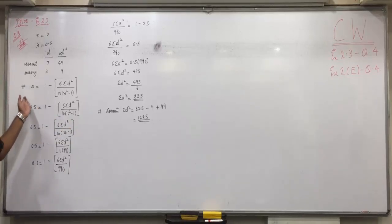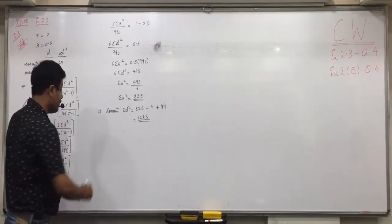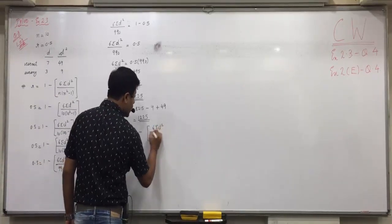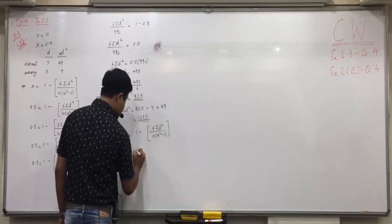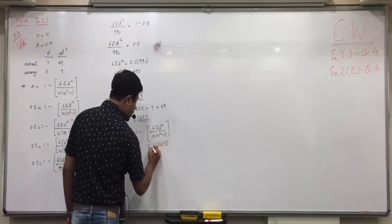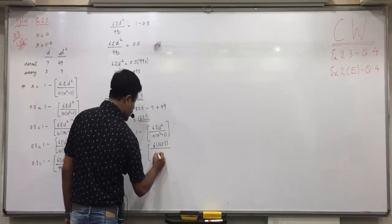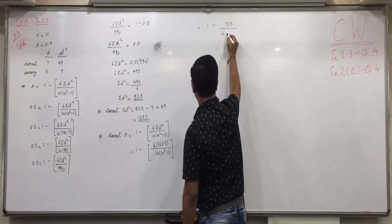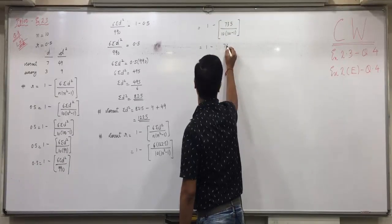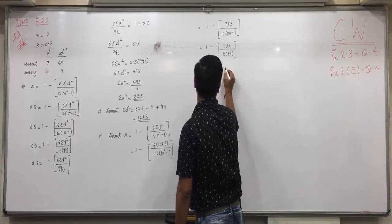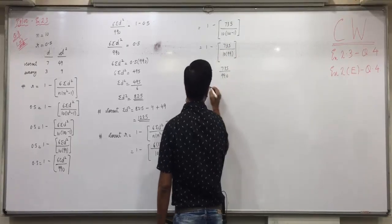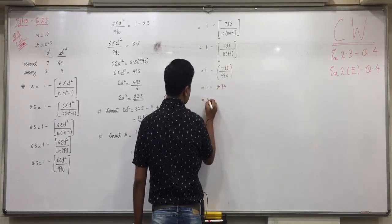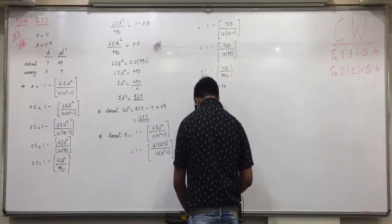Now, we will reapply the formula of R again. Taking what sigma D square? 122.5. So, correct value of R will be 1 minus 6 sigma D square upon n into n square minus 1. That is 1 minus 6 into 122.5 upon 10 into 10 square minus 1. That is 1 minus 735 upon 10 into 99. 1 minus 735 upon 990. Now, what is 735 upon 990? 1 minus 0.74. 0.26 is the correct value of R.